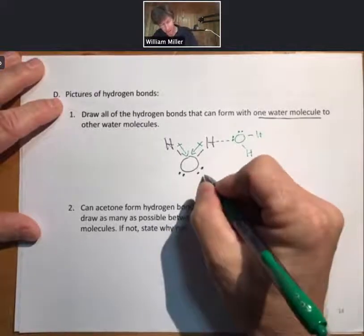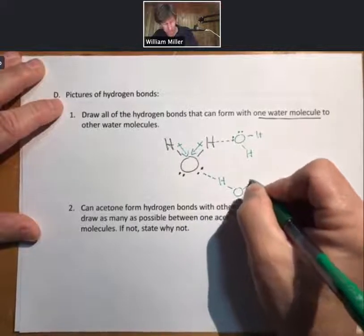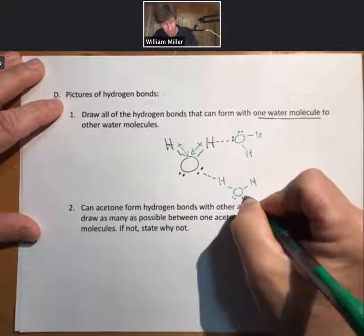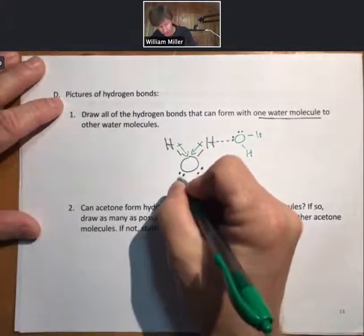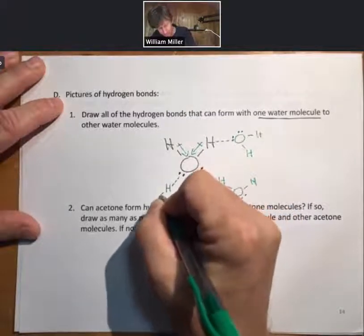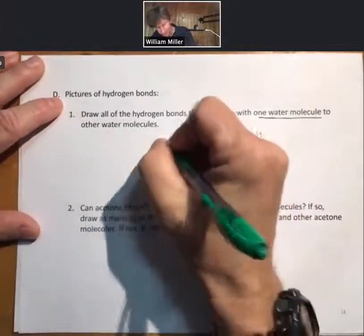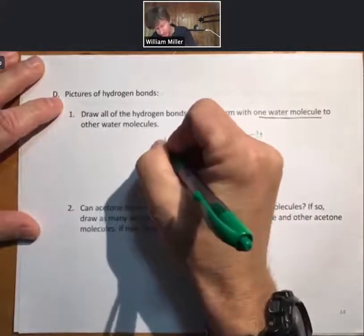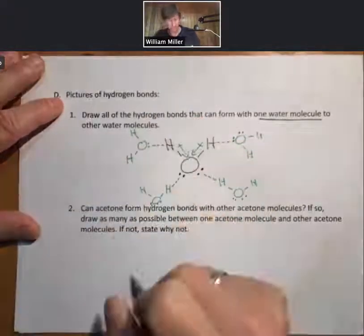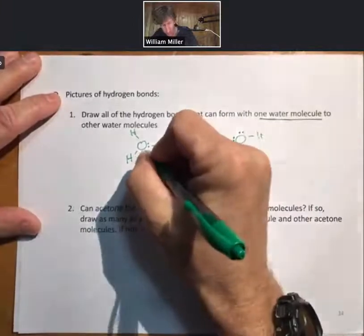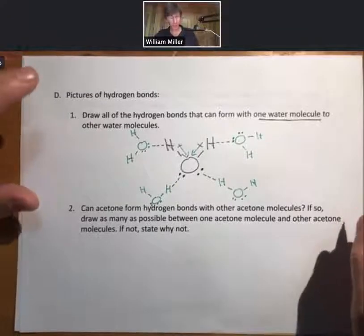And each oxygen will hydrogen bond with an H on a neighboring molecule. So I'll draw the other two in here there. So each water molecule can form a max of four hydrogen bonds.